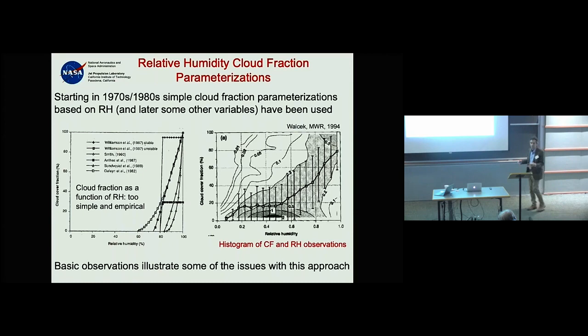You calculate cloud cover fraction as a function of mean relative humidity. There are various incarnations — they all look similar, typically a quadratic function starting at a critical value. But looking at observations of cloud fraction and relative humidity, the histogram shows a big blob near no-cloud conditions and another near the mean RH.